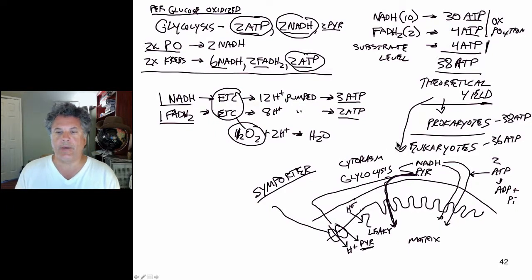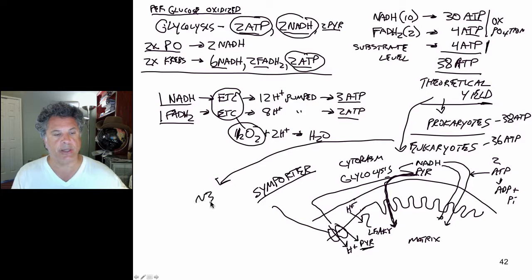So the theoretical yield for eukaryotes is not the actual yield. What we actually have is approximately 30 ATP per molecule of glucose oxidized in this process. So our actual yield is less than our theoretical yield.